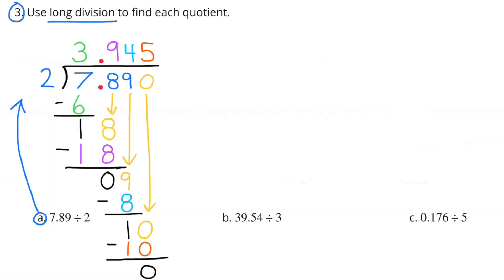Number 3, use long division to find each quotient. Part A: 7 and 89 hundredths divided by 2 equals 3 and 945 thousandths. 2 goes into 7 three times, so I put the 3 in the ones place above the 7. 3 times 2 is 6, and the difference is 1. I make sure I put my decimal point in.